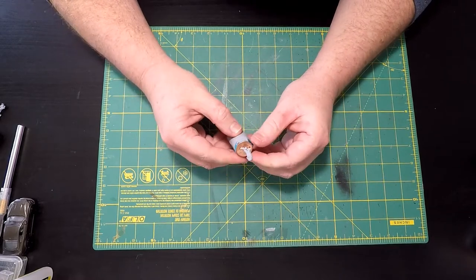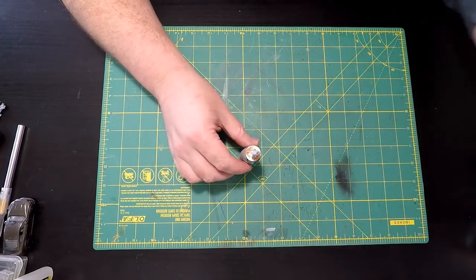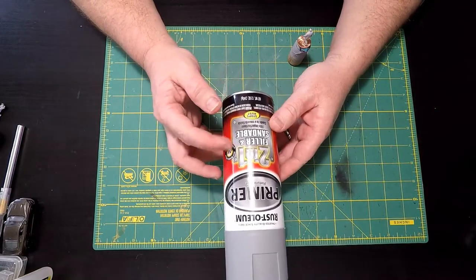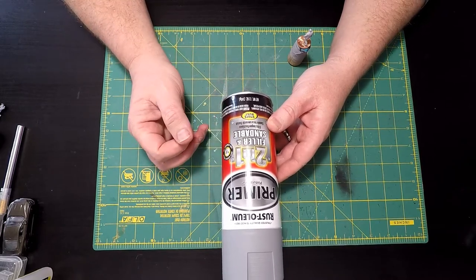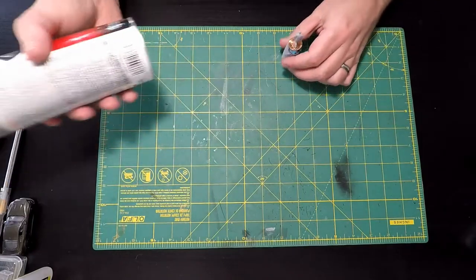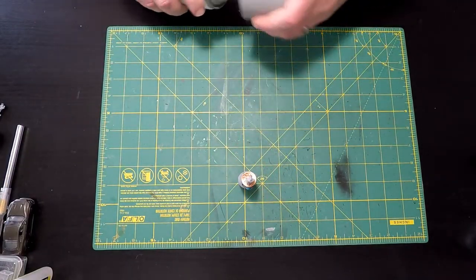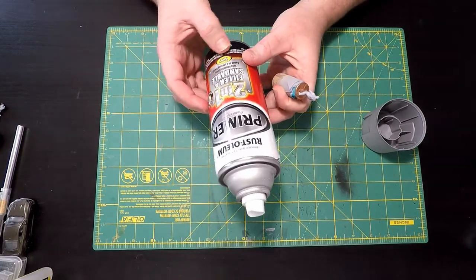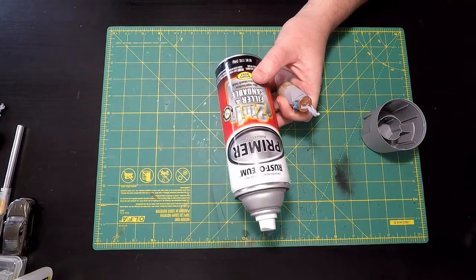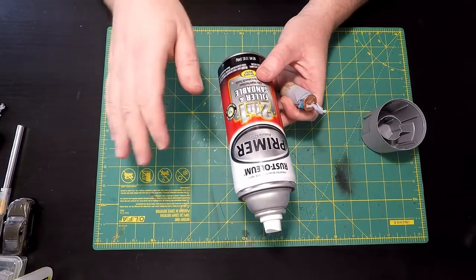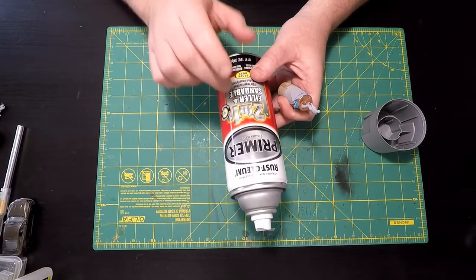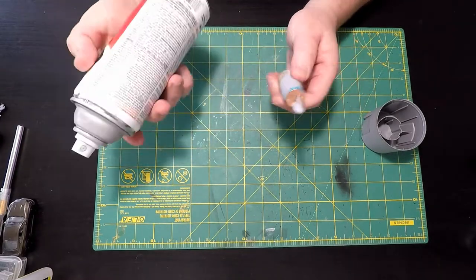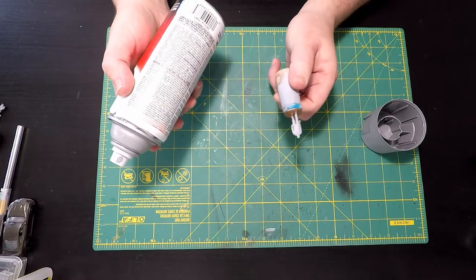The primer that I use is an automotive primer, a two-in-one filler sandable primer. I've noticed that this stuff is a little bit thinner than some primers and it goes on really well. It also helps hide some of the blemishes like striation lines on prints.